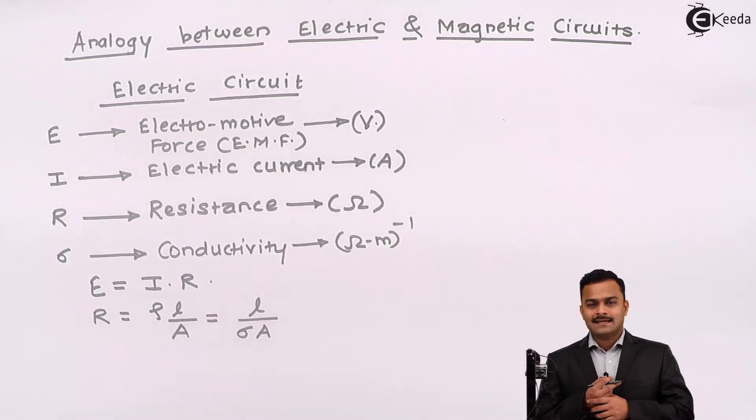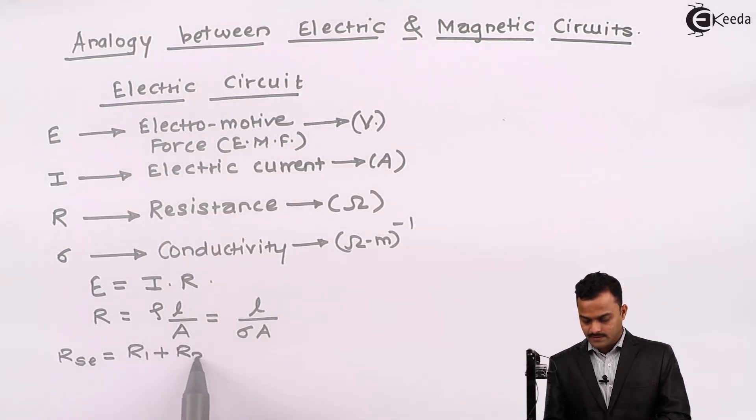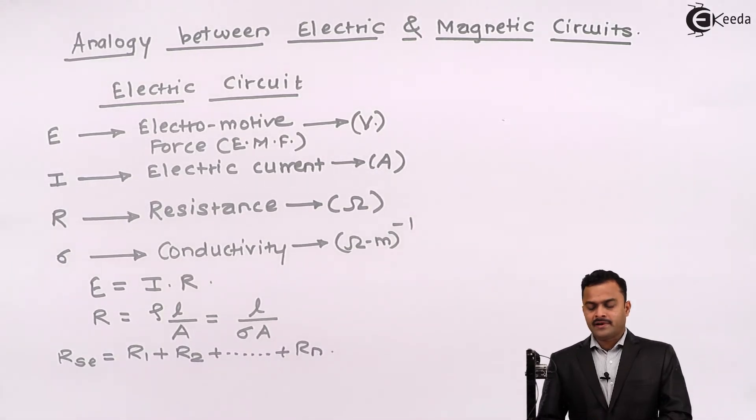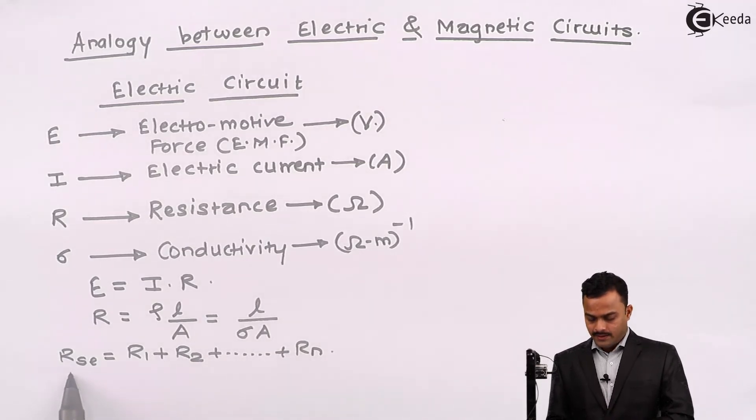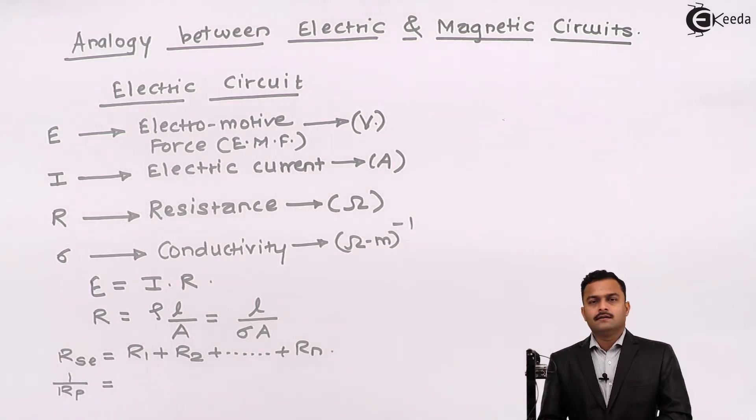If the resistances are in series, then equivalent resistance is nothing but addition of all the resistances in series. If resistances are in parallel, then inverse of a resultant is nothing but summation of inverses of all the resistances connected in parallel.